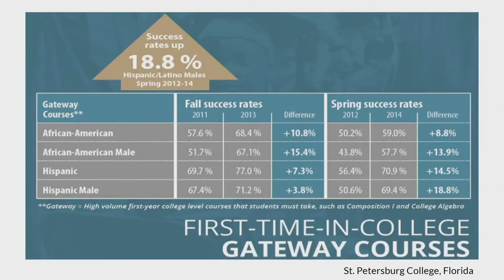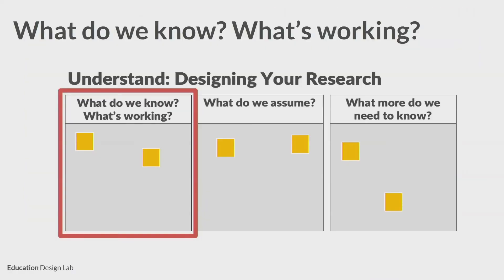This again, as we think about equity — this was from St. Petersburg College in the state of Florida — these are their gateway courses, and you can see the success rate. You can see the difference once they had put in these gateway courses, such as Comp 1 and college algebra, within their guided pathways implementation. So there are things that we can learn from that are already working in this space. The first thing we have to do is recognize what we know and what is working within guided pathways implementation on your own campus, at other institutions, or things you've heard through pre-reads or other circumstances.